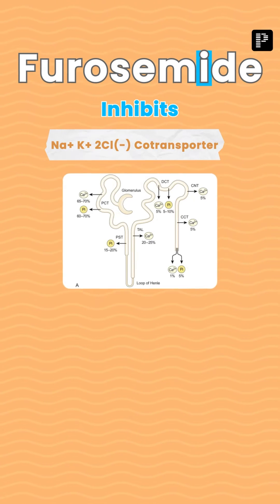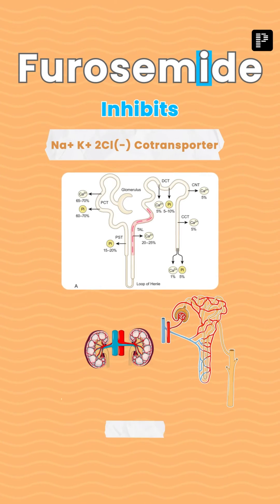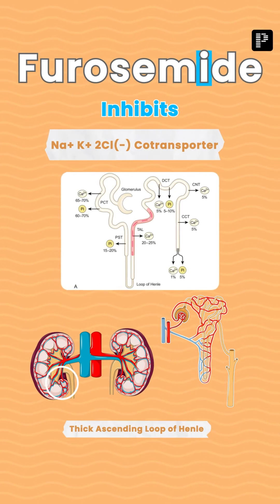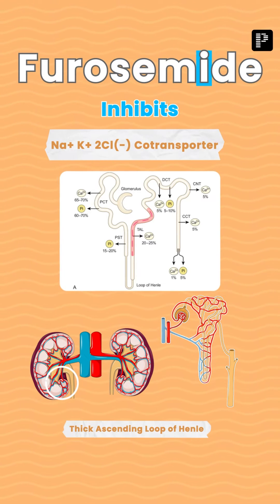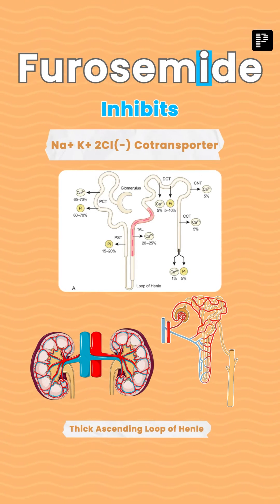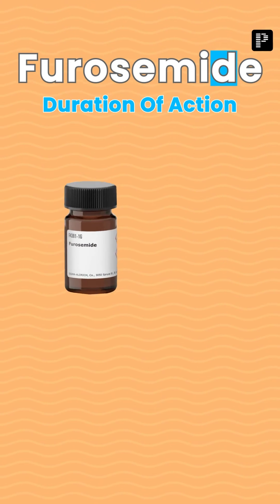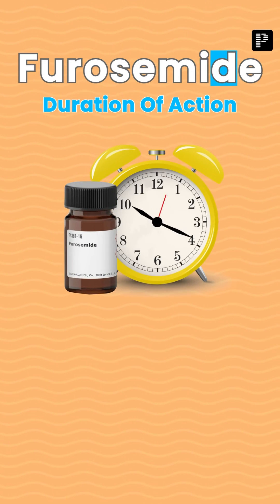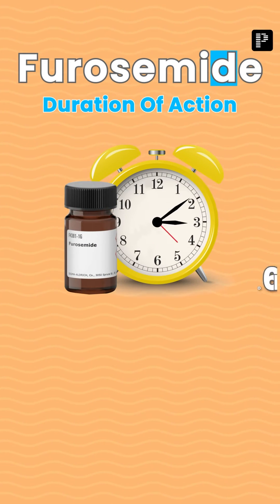I: they inhibit the sodium-potassium-2-chloride (Na-K-2Cl) co-transporter. Where? In the thick ascending loop of Henle — that is the site of action of loop diuretics.